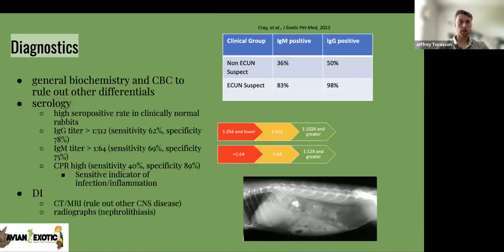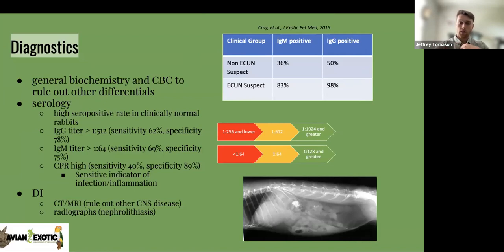Diagnostics — a bit of a busy slide. Right off the bat, you want a general biochemistry and CBC. For diagnostic imaging: CT, MRI, and radiographs — you can see those nephroliths here. CT and MRI can find peripheral vestibular disease, inner ear disease, or otitis media/interna. Serology is the big thing that's been very helpful for us to diagnose this disease, or at least give us proof that they are carrying it, because there is a high seropositive rate in clinically normal rabbits.